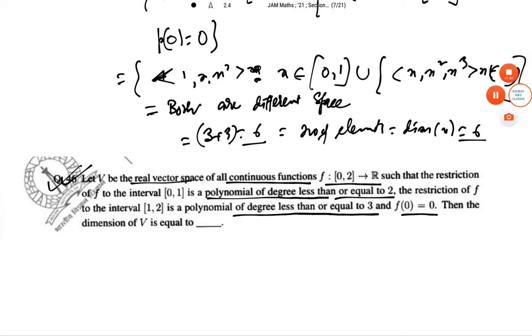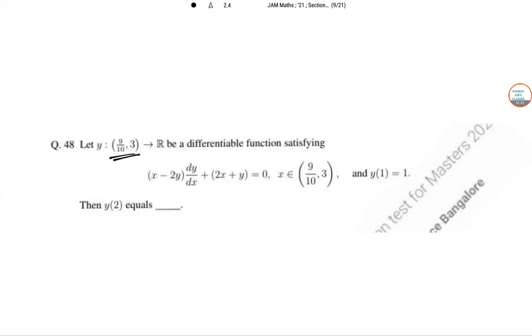The next question is: Let y:(9/10, 3) → R be a differentiable function satisfying this equation. Then y(2) equals what?